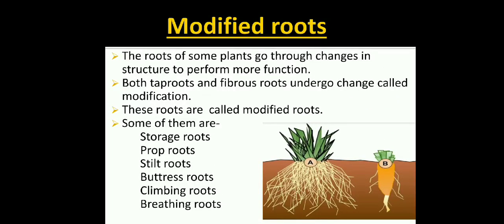The root of some plants goes through changes in structure to perform more functions. Both tap roots and fibrous roots undergo change called modification. These roots are called modified roots. Some of them are storage roots. Some roots are modified to provide additional support to the tree or plant and to help it stand upright. There are four types of support roots: prop roots, stilt roots, buttress roots and climbing roots.